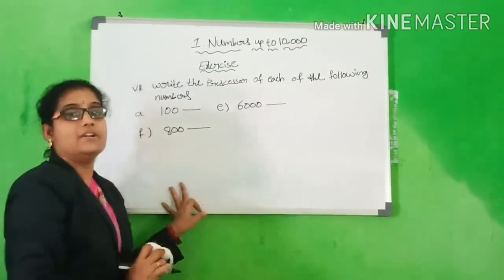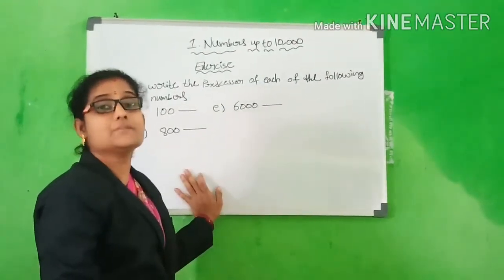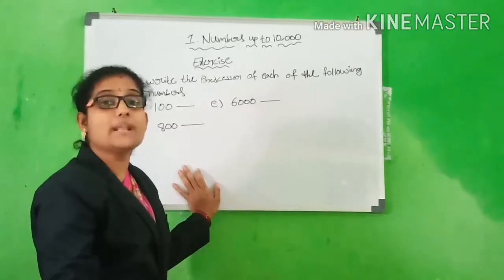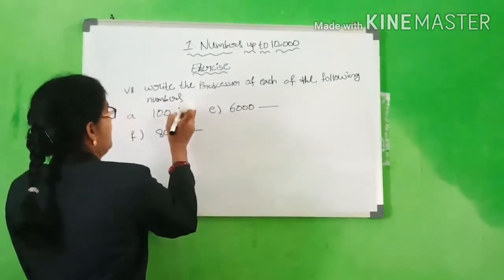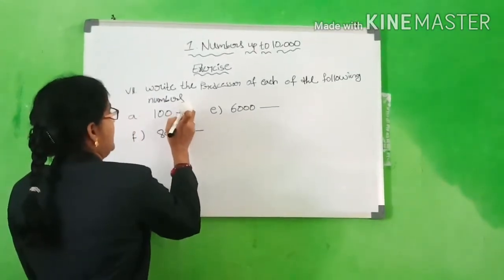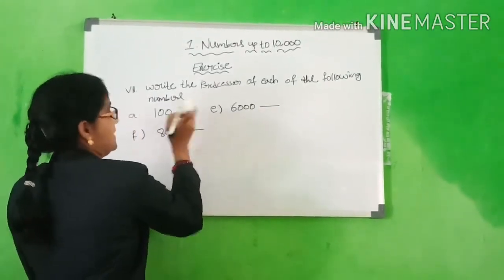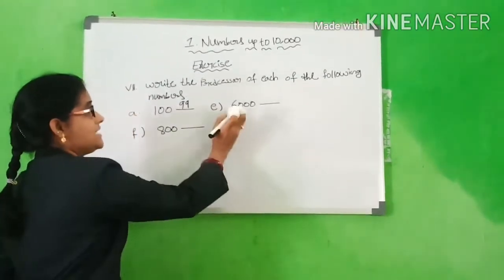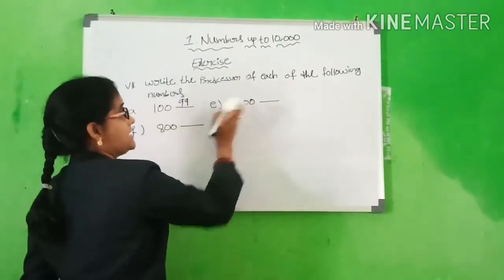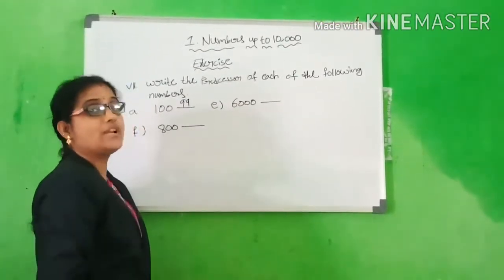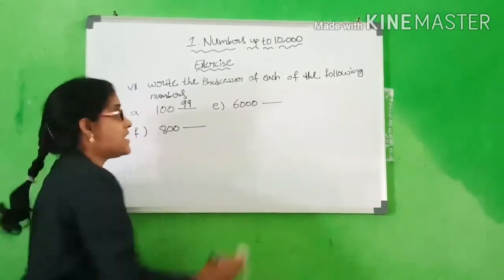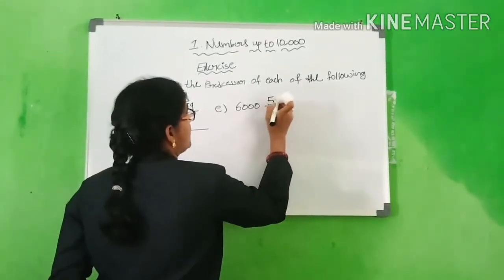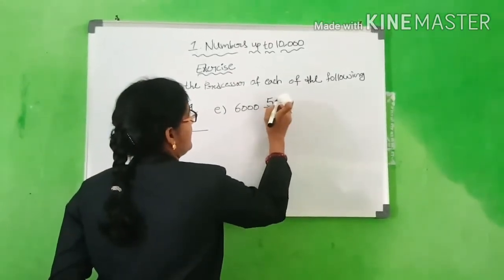A1: 100. What is the number before 100? 99. Now, what is this number? 6000. What is the number before 6000? 5999.